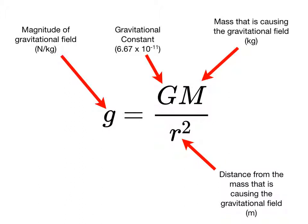This equation allows us to predict the magnitude of the gravitational field caused by a mass m at a location that's a distance r away from the mass that's causing the field.